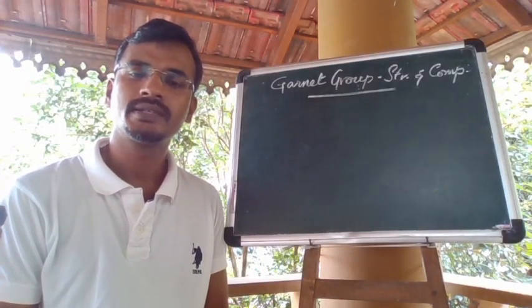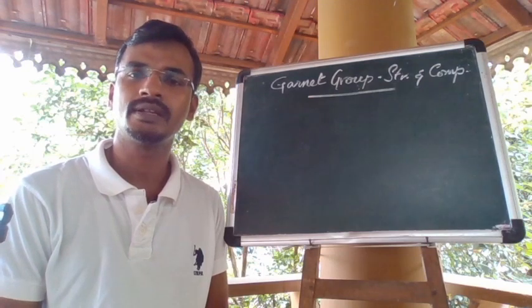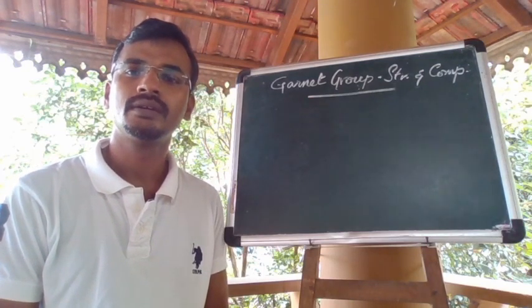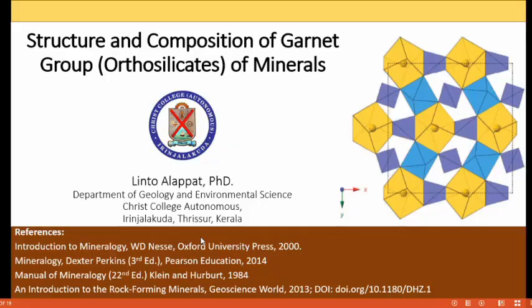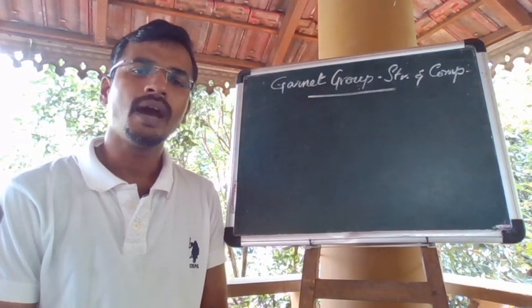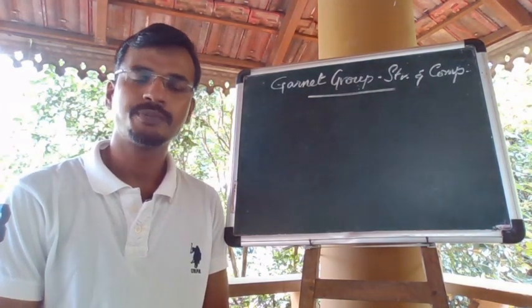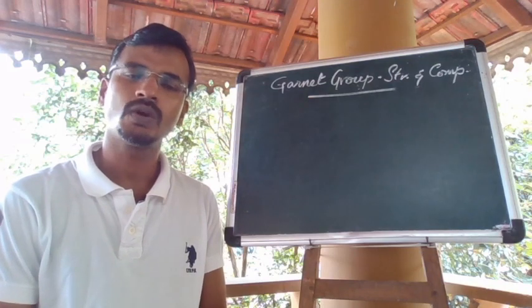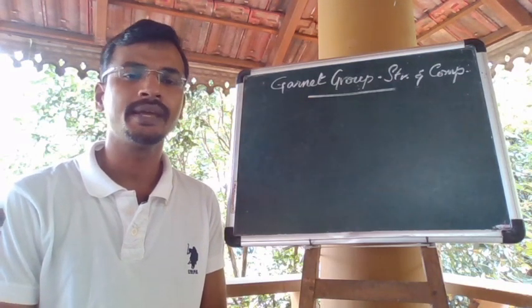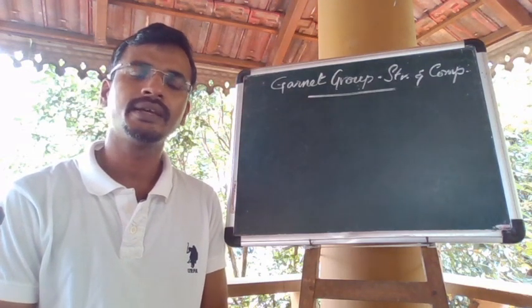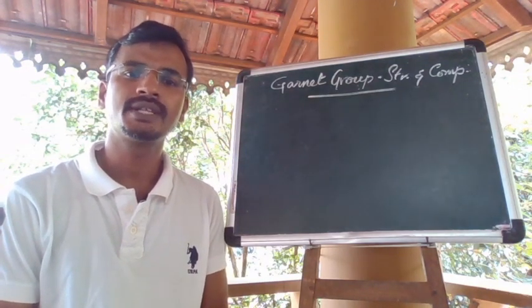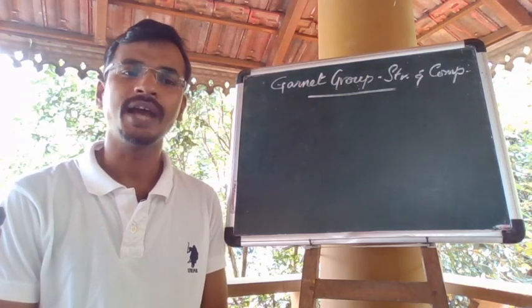Hello everyone, today we will discuss another important group of minerals in the orthosilicate group — the garnet group. Garnets are very common nesosilicate minerals especially in metamorphic rocks. They are also found in some igneous rocks as a minor constituent and as a detrital grain in sediments. They are frequently used as an index mineral in the delineation of isograds in metamorphic rocks.